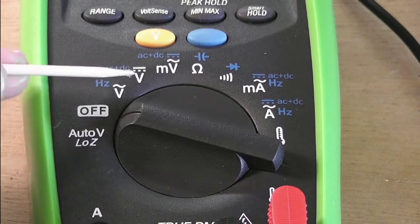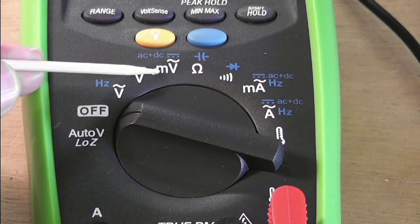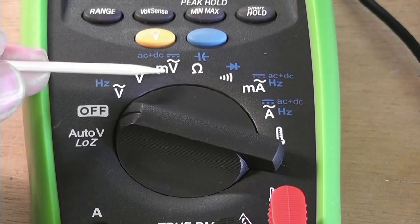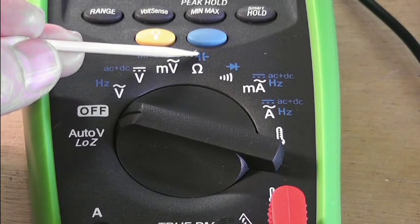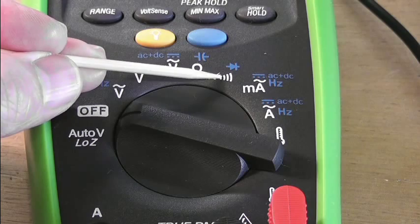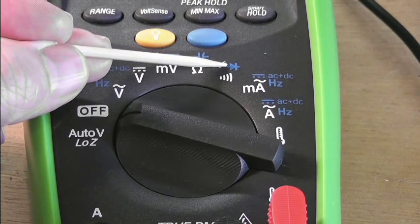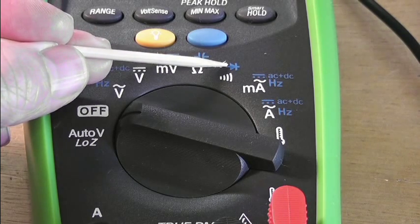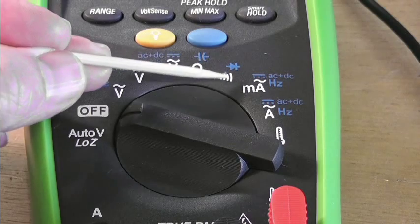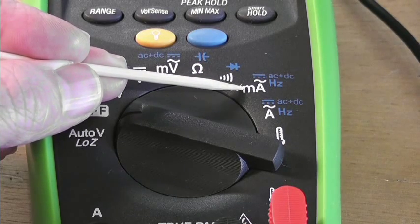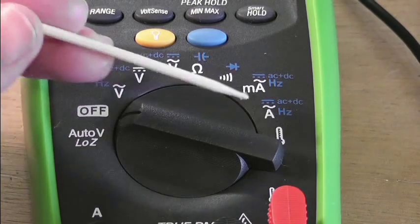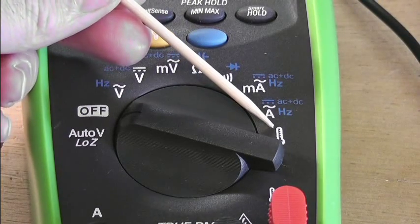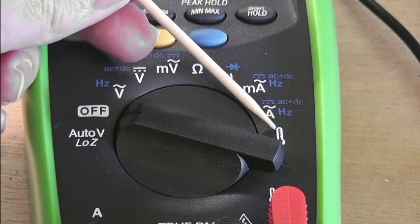So you've got AC volts, DC volts, millivolts, ohmmeter and the alternative function is capacitance. Here you've got a continuity meter and the alternative function is diodes. Here you've got the temperature dial where you would plug in the temperature probe.